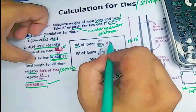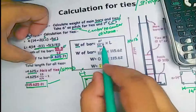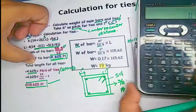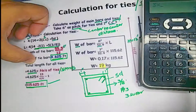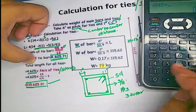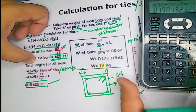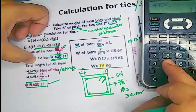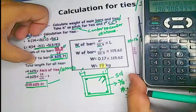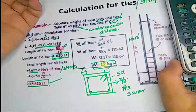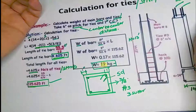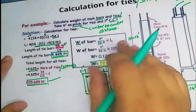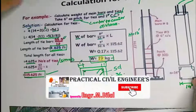The bar is a No. 3 bar (3/8 inch diameter). So 3 × 3 = 9, divided by 52.9 gives the unit weight of the No. 3 bar. Multiplying by the total length of 115.62 feet gives a total weight of approximately 19 kg. Thank you for watching. If you like this video, kindly subscribe to the channel and press the bell icon for more updates.